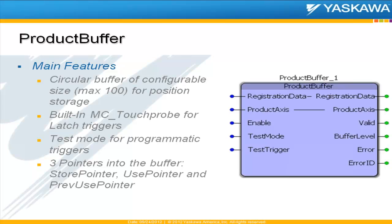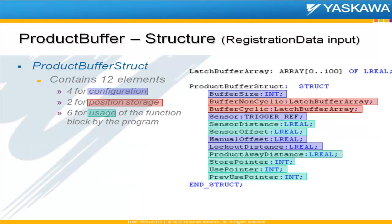The main features of this product buffer: it has a place to store the captured data, up to 100 elements but it is a configurable size, as we'll see. It has a built-in latch function using an MC touch probe. It also has a test mode input — if you activate that, you can just give it triggers from the program rather than using the actual latch input of the sensor. And it features three main pointers into the buffer: the store pointer, a use pointer, and a previous use pointer.